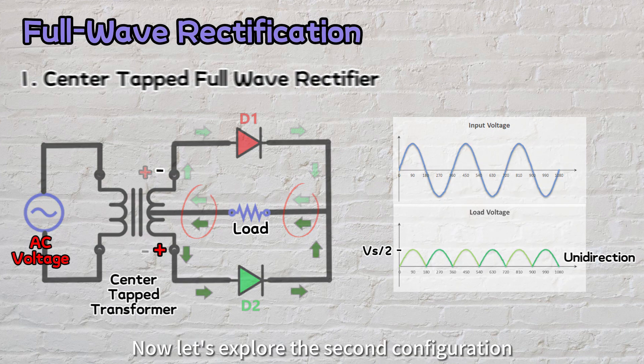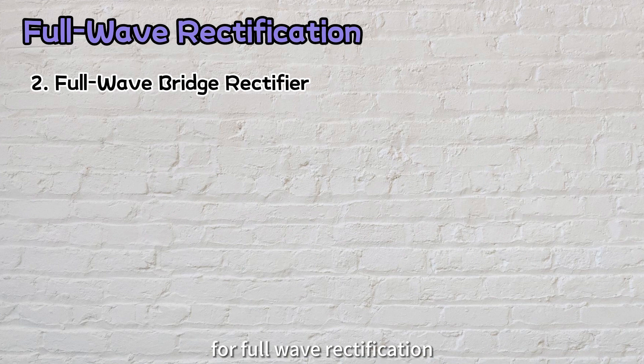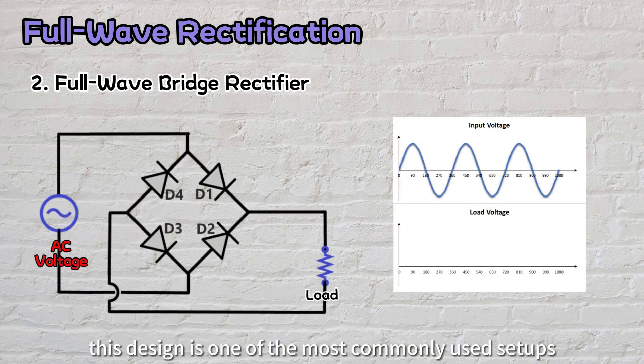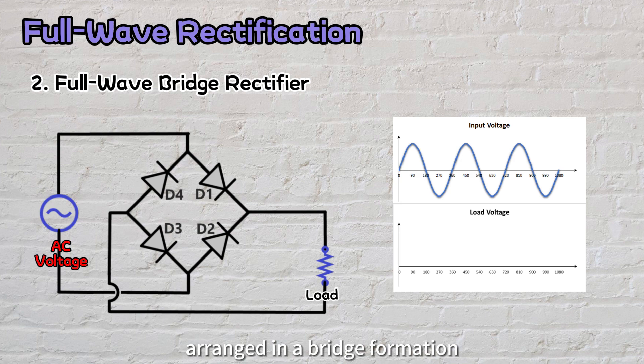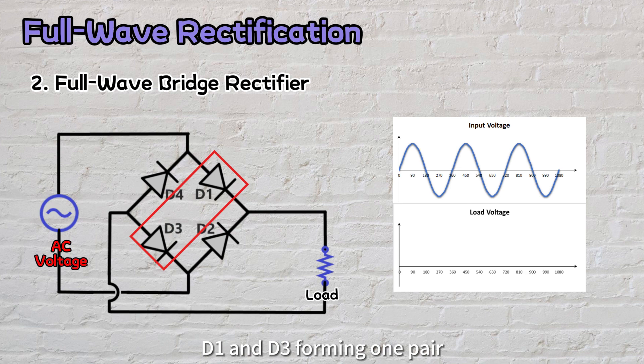Now let's explore the second configuration for full-wave rectification, known as the full-wave bridge design. This design is one of the most commonly used setups and comprises of four diodes, D1 to D4, arranged in a bridge formation. These diodes can be divided into two pairs: D1 and D3 forming one pair, while D2 and D4 forming the other.